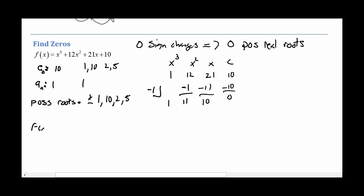All right. So our function so far looks like, let's see, a negative 1 means it's going to have a factored form of x plus 1. And that 1, 11, and 10 means x squared plus 11x plus 10.